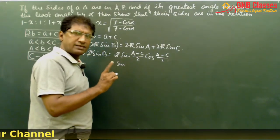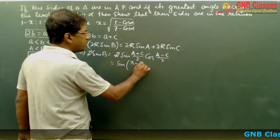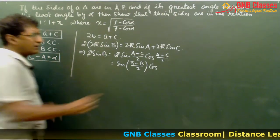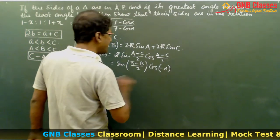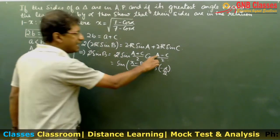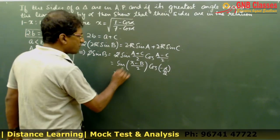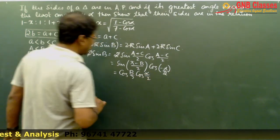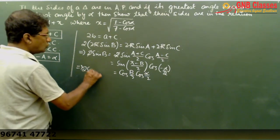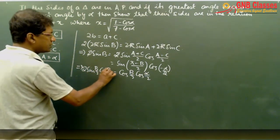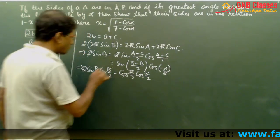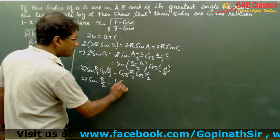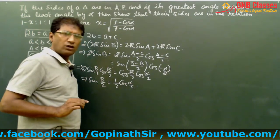Since A + B + C = 180°, we have (A+C)/2 = (π-B)/2, so sin((A+C)/2) = sin(π/2 - B/2) = cosB/2. Also A - C = -α, so cos((A-C)/2) = cos(α/2). Therefore sinB = cosB/2·cos(α/2). Expanding sinB = 2sinB/2·cosB/2, we get sinB/2 = ½cos(α/2).